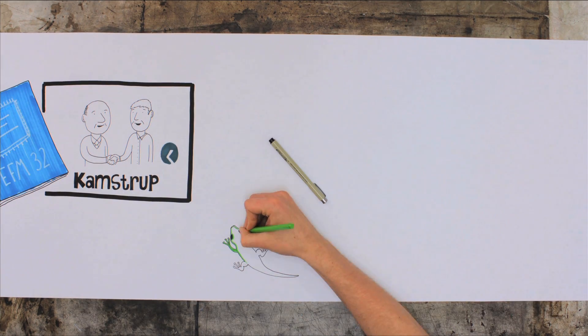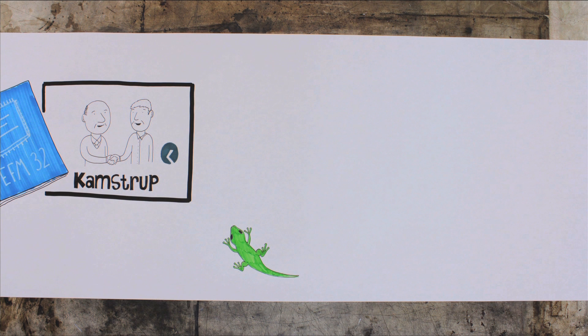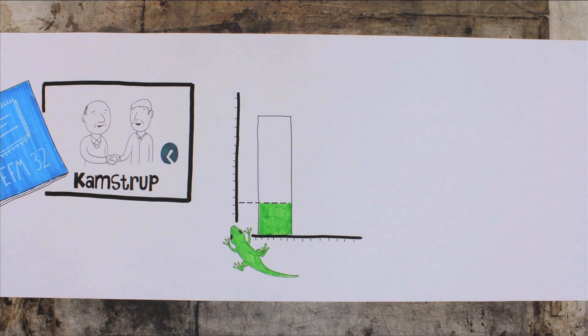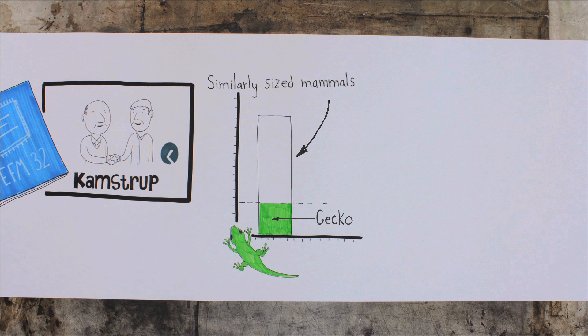Gecko was chosen as the name for our first microcontroller product range. A tiny green lizard, the gecko, at rest using a tenth of the energy of similarly sized mammals. A perfect name.